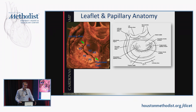Behind the valve there's a coronary sinus and a circumflex artery — important to recognize as structures that can occasionally be impacted by a surgeon or catheter during mitral valve replacement or repair. Regarding nomenclature, the posterior scallops are labeled P1, P2, P3 starting laterally and moving medially. The anterior leaflet generally has no true scallops, but we call its regions A1, A2, A3 to match the posterior.